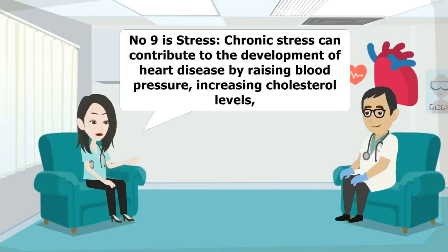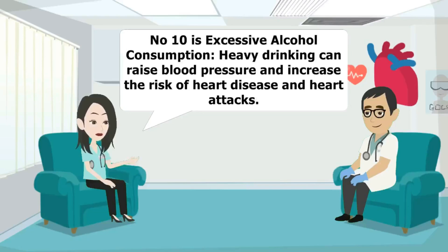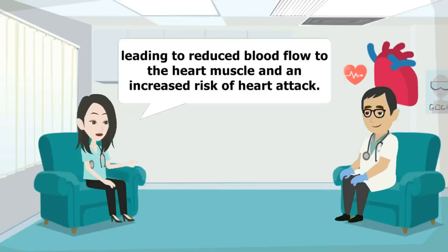Number nine is stress. Chronic stress can contribute to the development of heart disease by raising blood pressure, increasing cholesterol levels, and promoting unhealthy coping behaviors such as overeating, smoking, or excessive alcohol consumption. Number ten is excessive alcohol consumption. Heavy drinking can raise blood pressure and increase the risk of heart disease and heart attacks. Number eleven is illegal drug use. Certain drugs such as cocaine, amphetamines, and methamphetamines can cause spasms in the coronary arteries, leading to reduced blood flow to the heart muscle and an increased risk of heart attack.